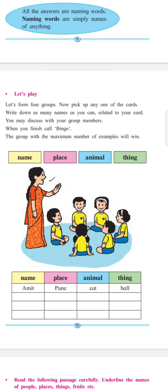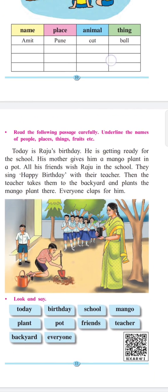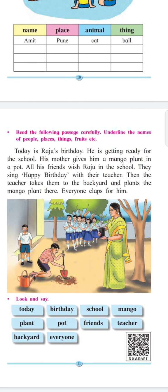Understood? Next: read the following passage carefully, underlining names of people, places, things, fruits, etc. What we have to do is read this paragraph and underline all the names.